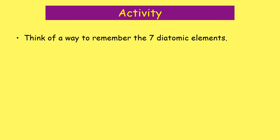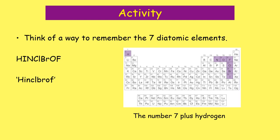One mnemonic is 'HINClBrOF' — hydrogen, iodine, nitrogen, chlorine, bromine, oxygen, and fluorine. Another way is to remember 'seven plus hydrogen': there are seven diatomic elements and most of them form the number seven on the periodic table — nitrogen, oxygen, fluorine, and down to iodine — with hydrogen added separately. That's how the teacher remembers it.